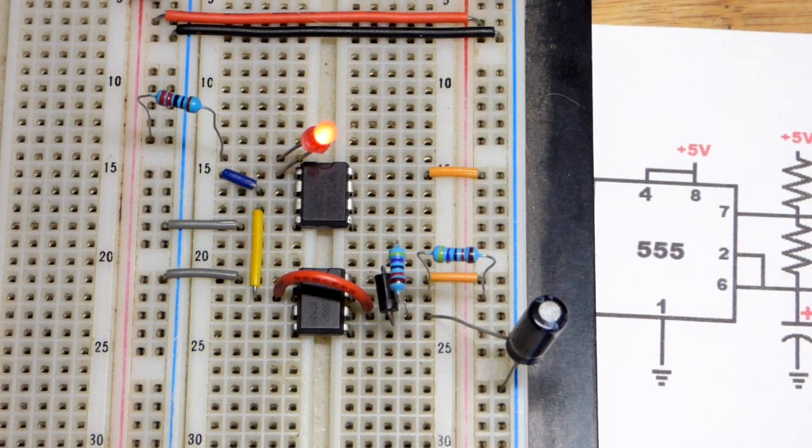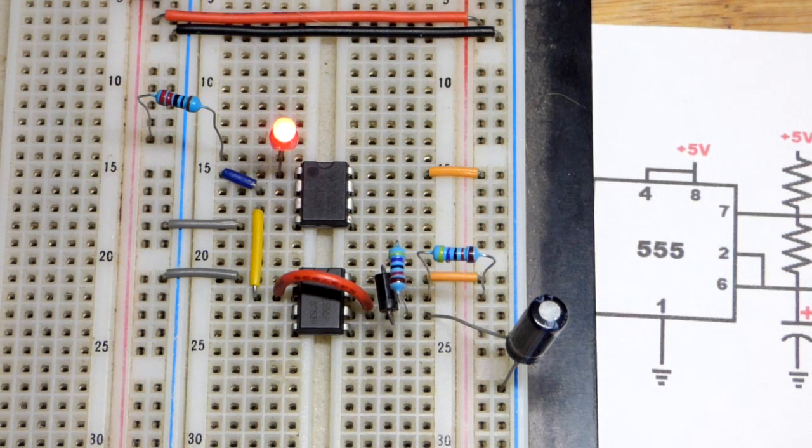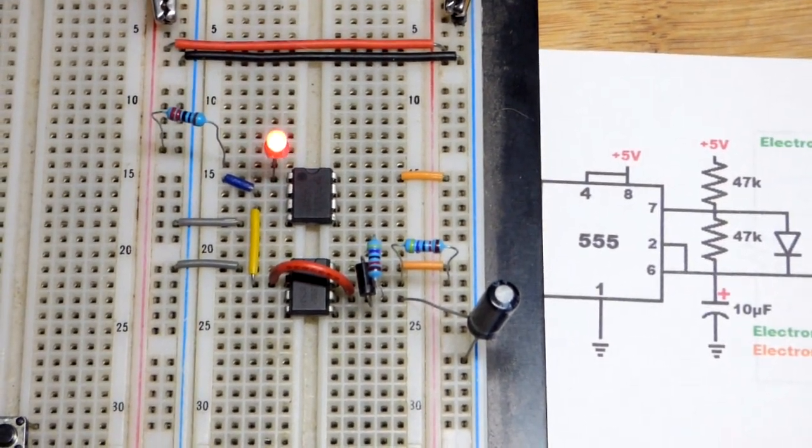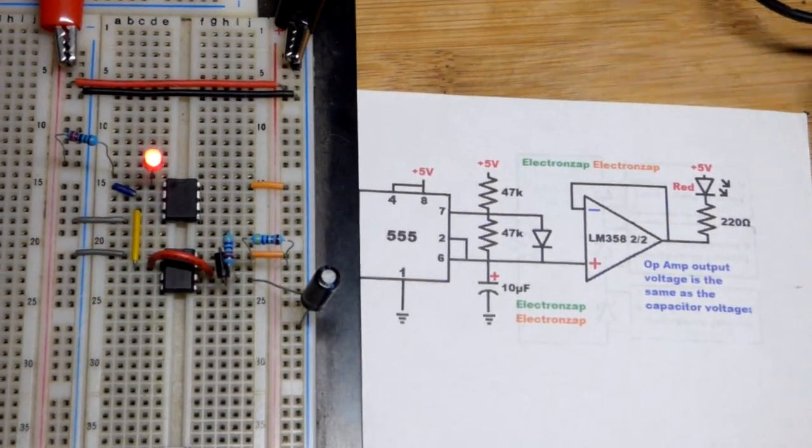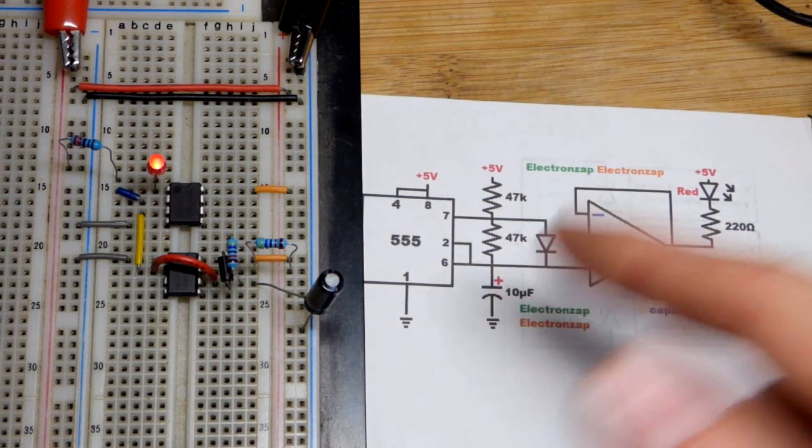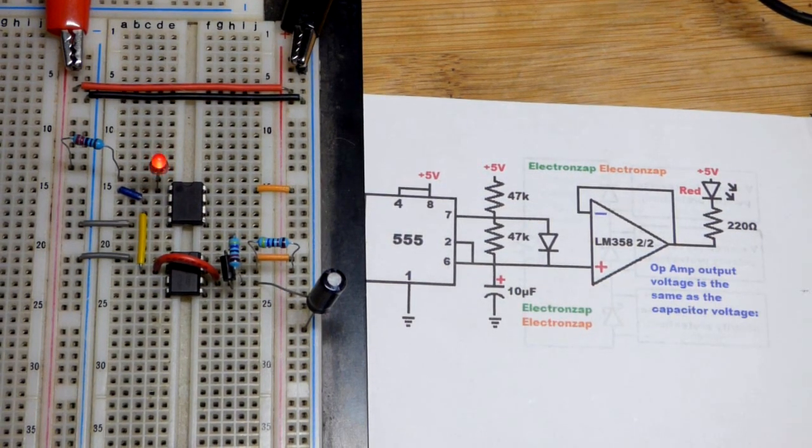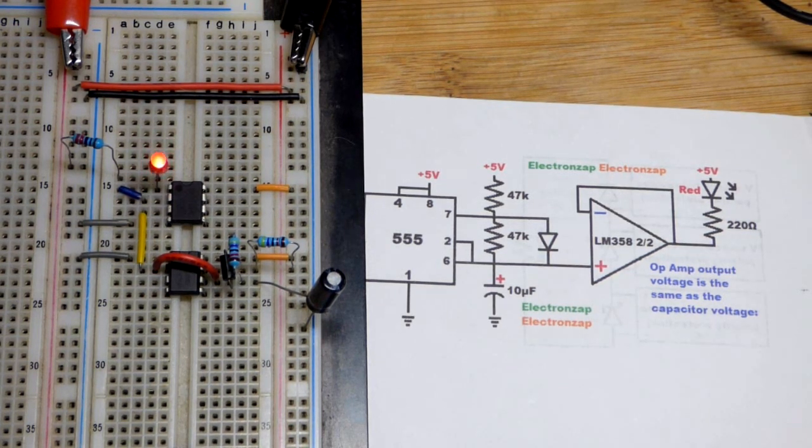I think this is about as fast as you'd want to go, otherwise it just kind of looks like a blinking light. It's been a while since I have made this, maybe a little bit slower would be better. As I said before you just simply use higher value timing resistors, one or the other and the capacitor if you want to go slower. Lower values of course if you want to go quicker.